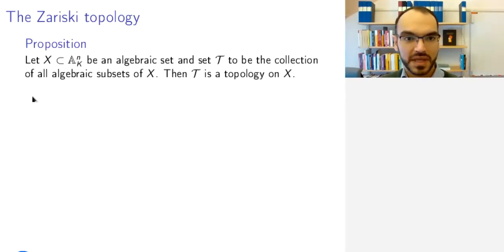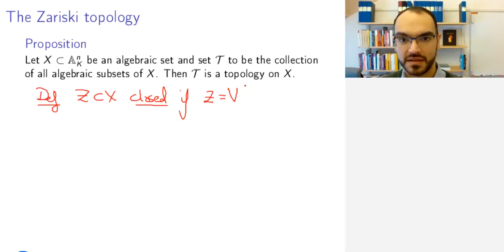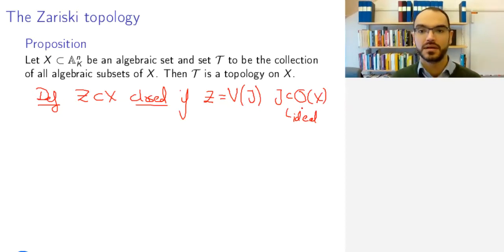What we mean is that we define a set Z, subset of X, to be closed if Z is an algebraic set. So if Z is the vanishing set of some ideal of functions J, where J is an ideal in the algebra of regular functions, the coordinate ring of X.